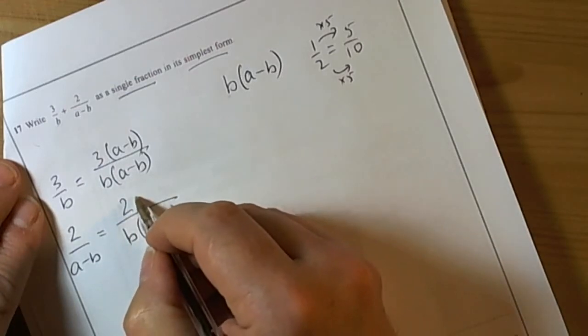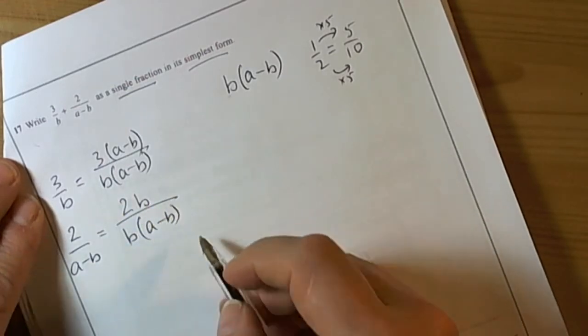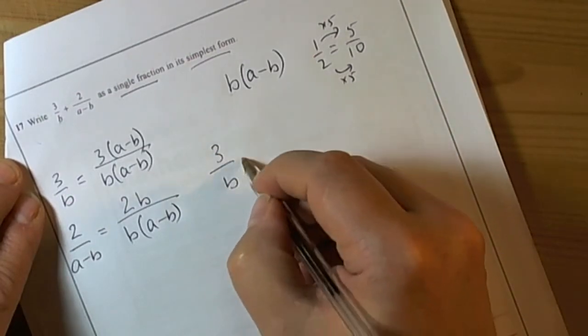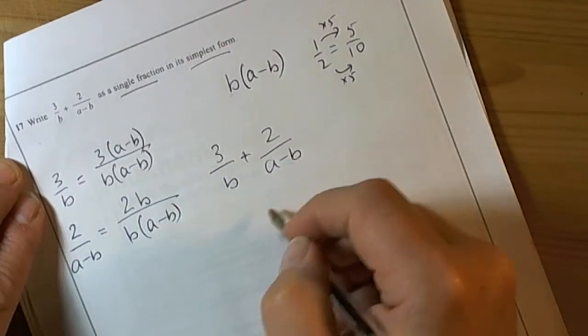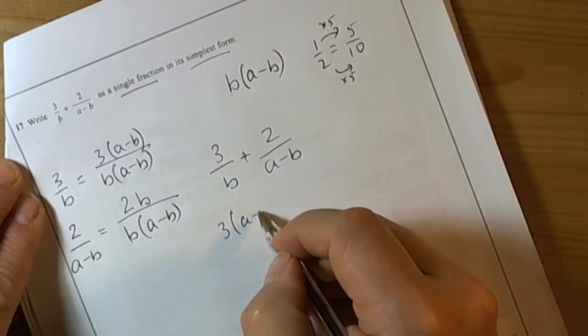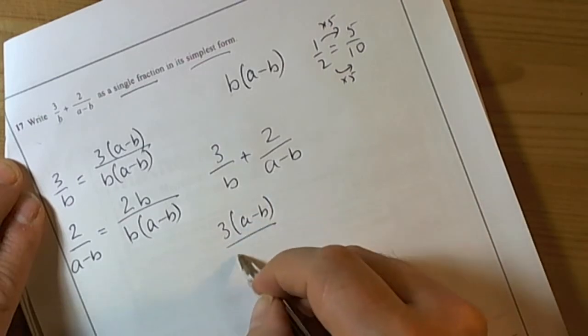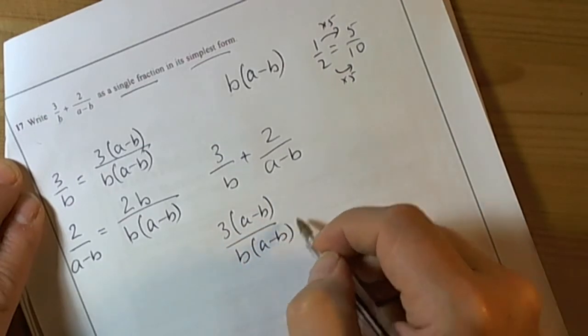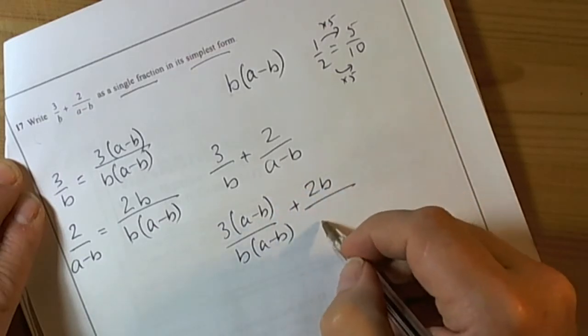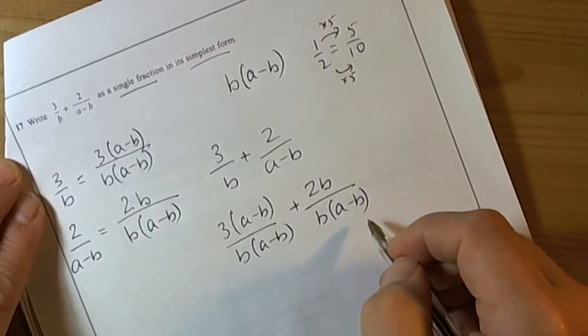We have to multiply the numerator by b as well. So the 3 over b plus 2 over (a-b) has become 3(a-b) over b(a-b) plus 2b over b(a-b).